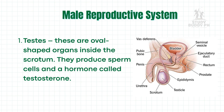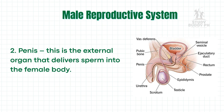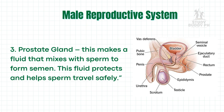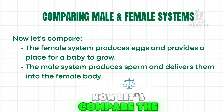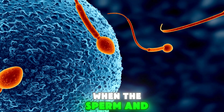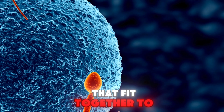The male reproductive system also has three important parts. One: testes — oval-shaped organs inside the scrotum that produce sperm cells and a hormone called testosterone. Two: penis — the external organ that delivers sperm into the female body. Three: prostate gland — this makes a fluid that mixes with sperm to form semen, which protects and helps sperm travel safely. The female system produces eggs and provides a place for a baby to grow, while the male system produces sperm and delivers them. When the sperm and egg meet, that's when life begins — like two puzzle pieces that fit together to create life.